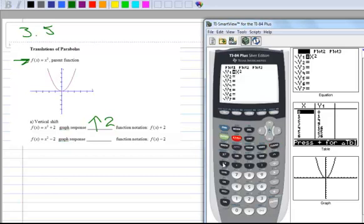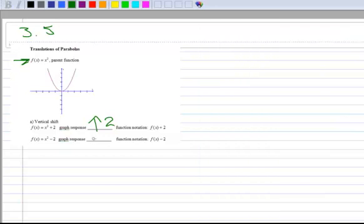Now type in the second one under vertical shift, x squared minus 2. You can probably already guess what's going to happen here. Hit graph. There's your parent function, and what happened when you had x squared minus 2, it looked like it shifted downwards. So come over to your worksheet, draw a down arrow, and then 2, so it shifted down by 2.